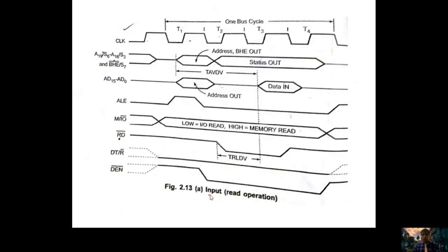My focus now is on the I/O read operation — the processor wants to read data from an input port. To draw the timing diagram, the first step is the clock. The clock generator gives clock pulses to 8086. One machine cycle, also called a bus cycle or clock cycle, is a combination of T1 to T4 states. T1 is the first interval, then T2, T3, and T4 — together forming one bus cycle.